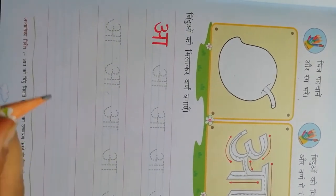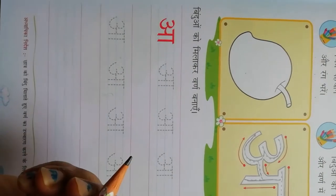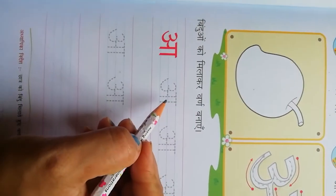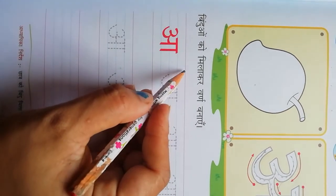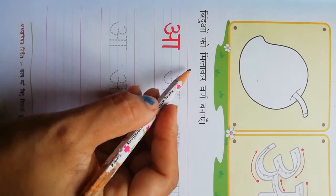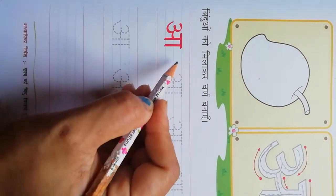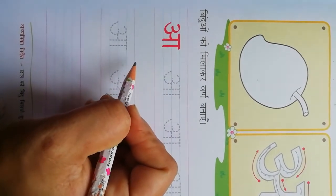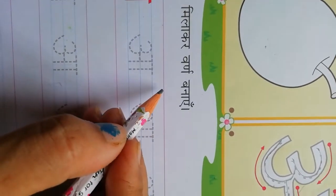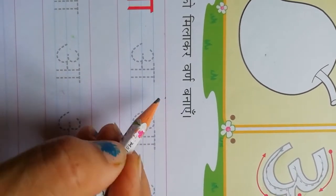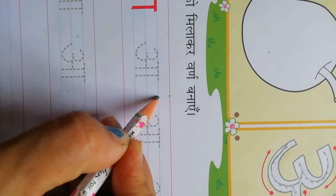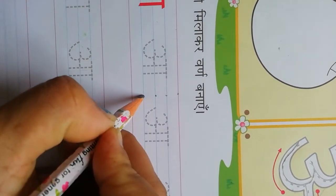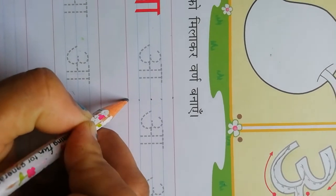Now, first we learn how many lines are there. See, there are one, two, three, five lines. Okay, now see. Red lines, blue lines, again blue lines, again blue lines, again red lines.